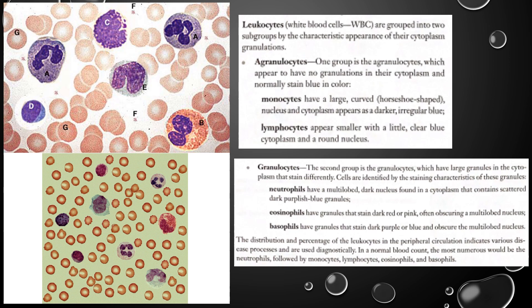Because basophils are so dark and multi-lobed, they seem to take up a large percentage of the cell with that dark staining. Looking at the picture, which one seems to take up the majority of the cell with that dark staining? You should be looking at letter C — that's the one that looks best for being a basophil.